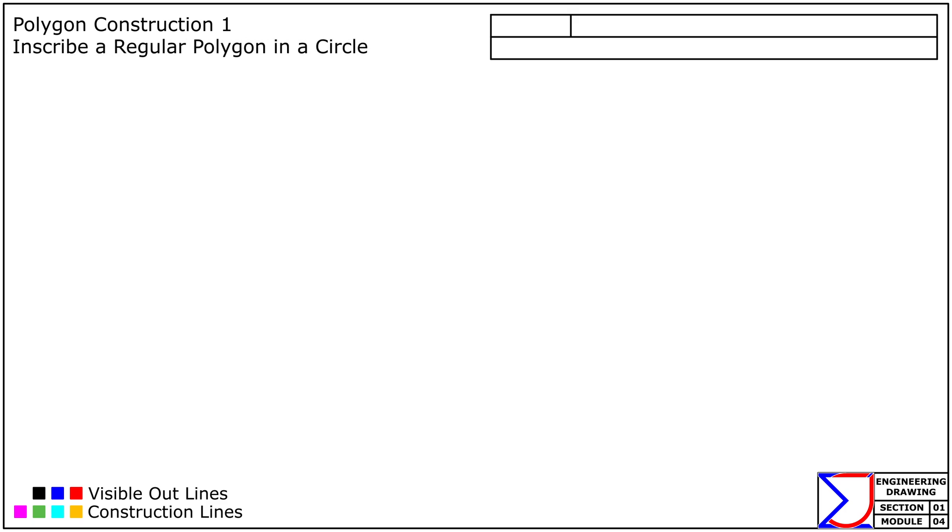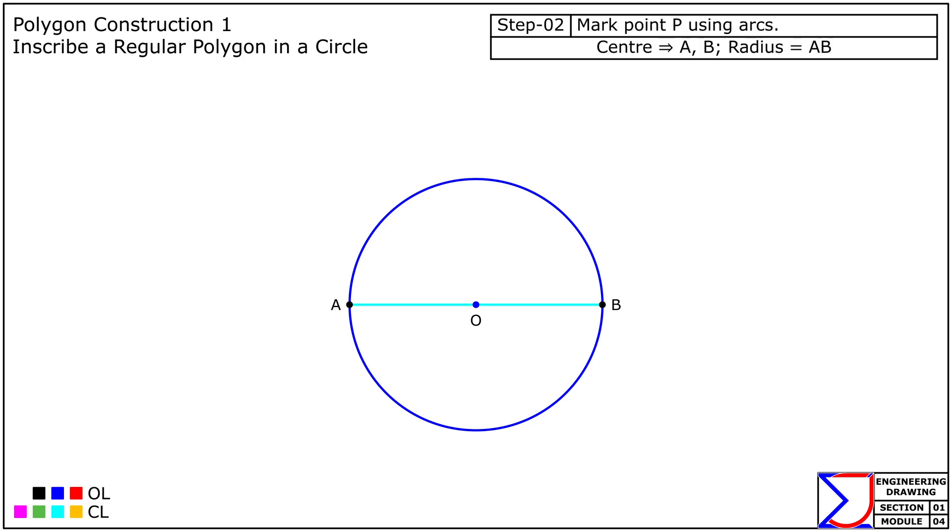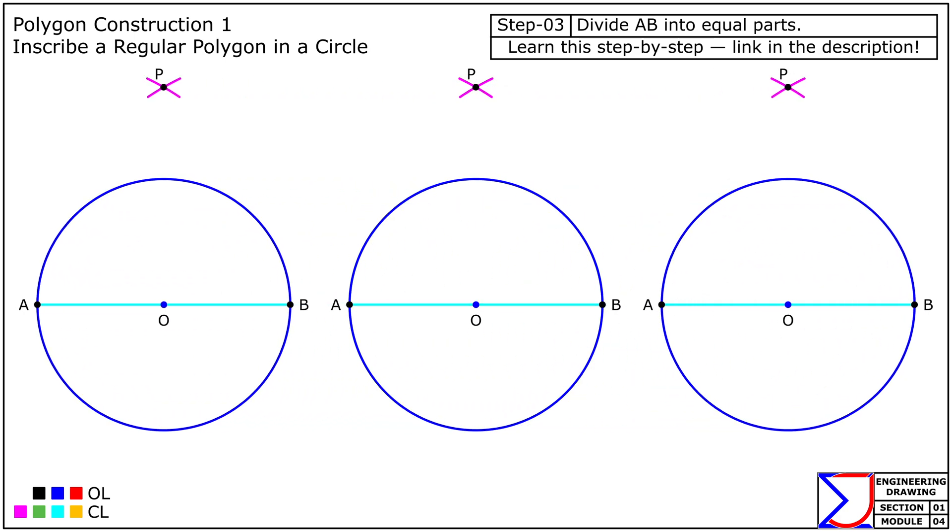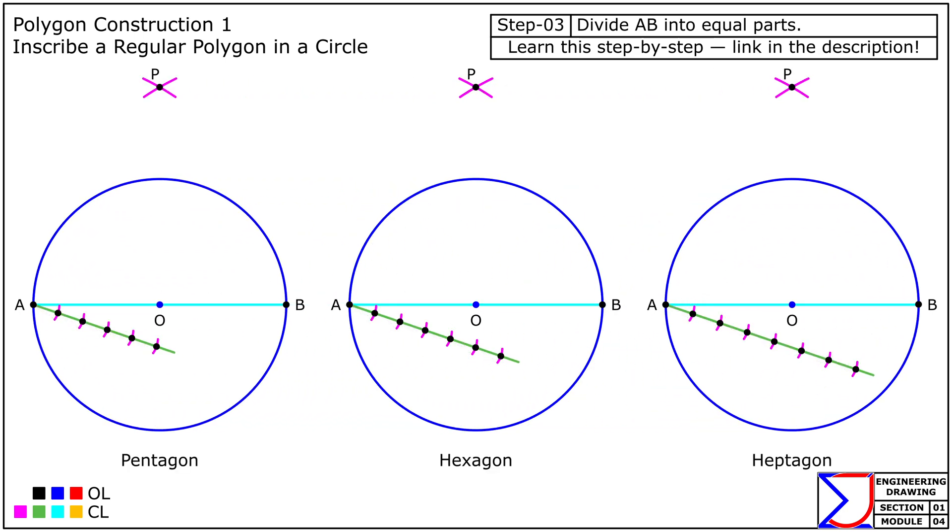Let's start by inscribing regular polygons within a circle. Draw a diameter AB of the given circle. With centers A and B and radius AB, draw arcs intersecting each other at P. Next, divide AB into the same number of equal parts as the number of sides: five for the pentagon, six for the hexagon, and seven for the heptagon.